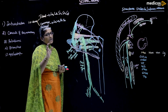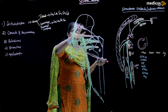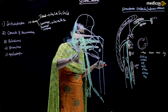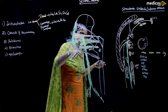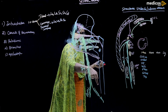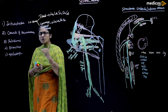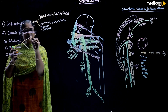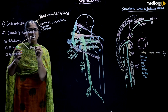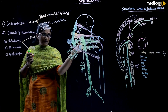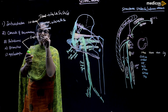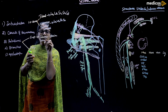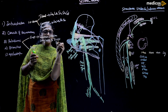Now the relations: the superficial relations are the gluteus maximus and the long head of biceps femoris, which crosses it superficially. So two muscles cross the sciatic nerve superficially — gluteus maximus and the long head of biceps femoris.